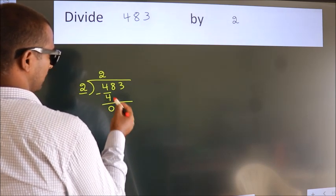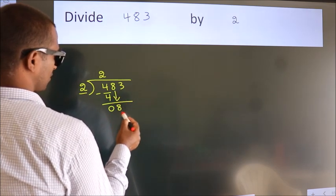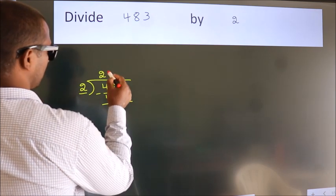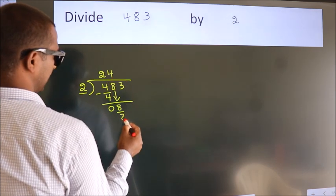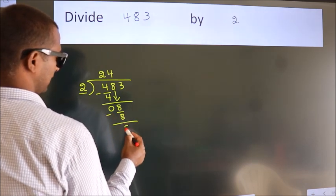After this, bring down the beside number, so 8 down, so 8. When do we get 8? In 2 table, 2 4s, 8. Now, we subtract, we get 0.